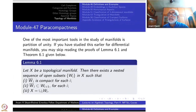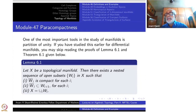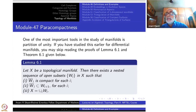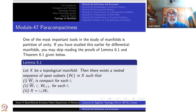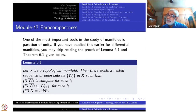Continuing with the topological aspect of topological manifolds, today we shall study paracompactness. We are more interested in the partition of unity part of paracompactness rather than all the topological conditions of locally finite open refinements. We will directly prove the existence of partition of unity. Together with Hausdorffness, paracompactness is equivalent to existence of partition of unity — this is a general aspect.